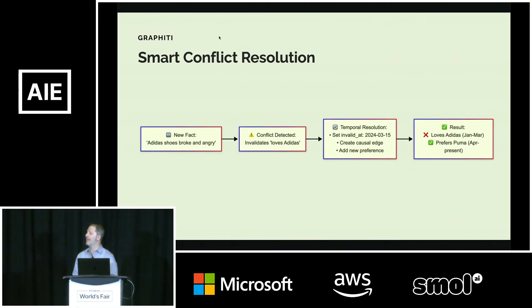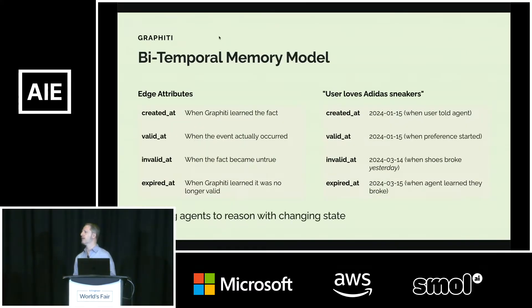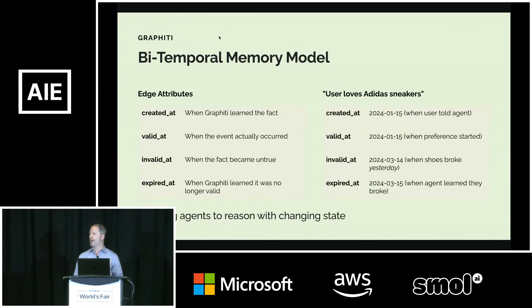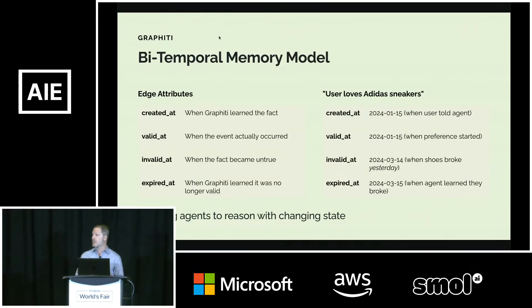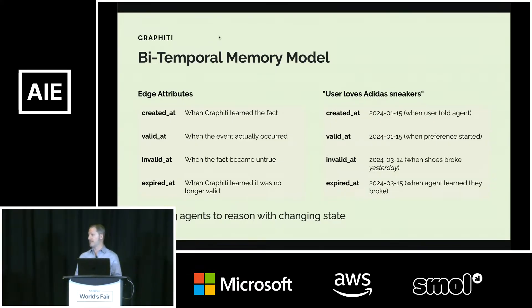How do we handle invalidation of facts if a state flips back to a prior state? It depends on the context. A new edge might be created that represents a success effect, or the invalidate date might be nullified.